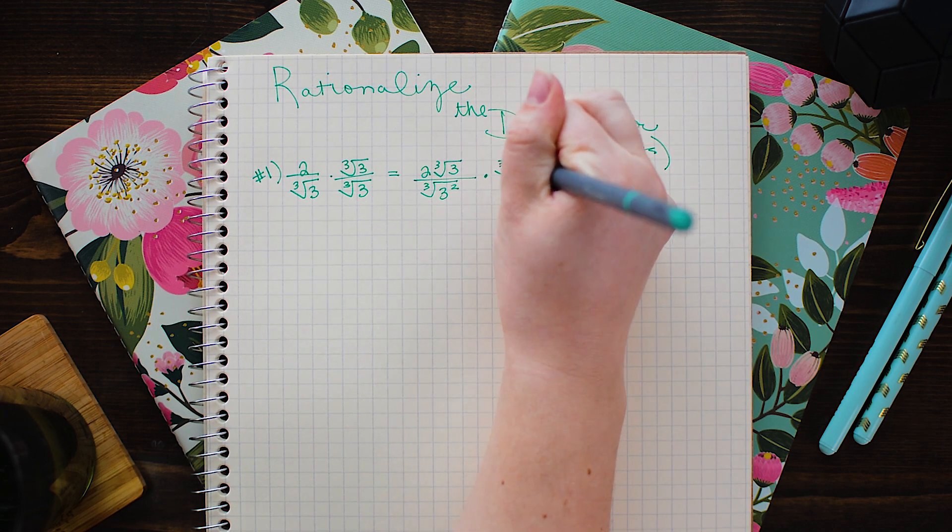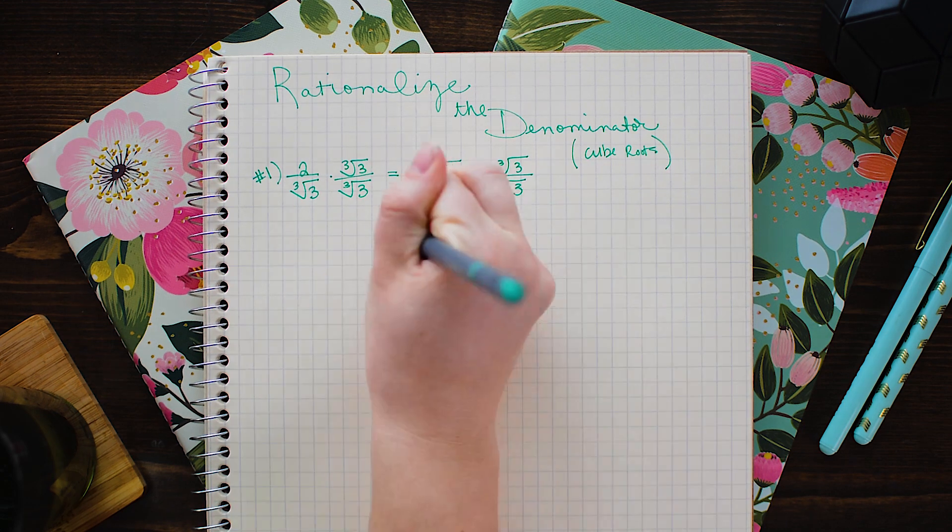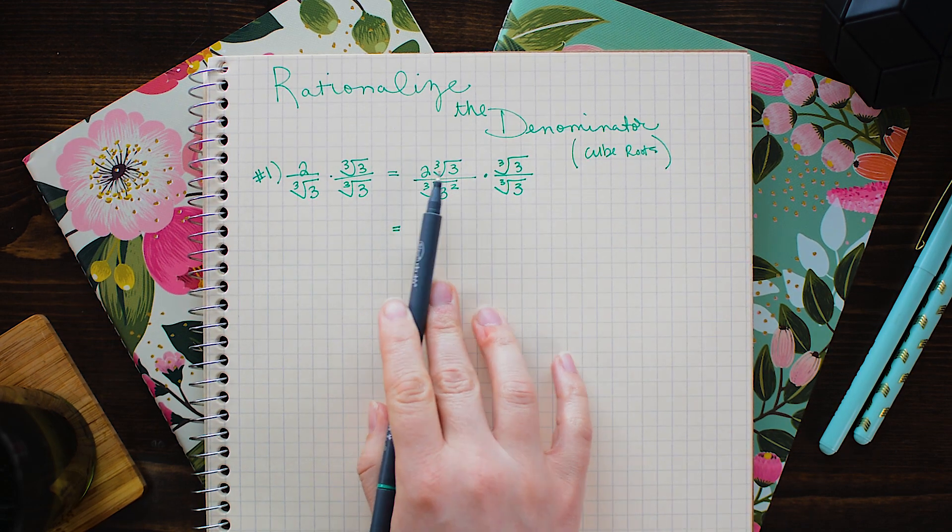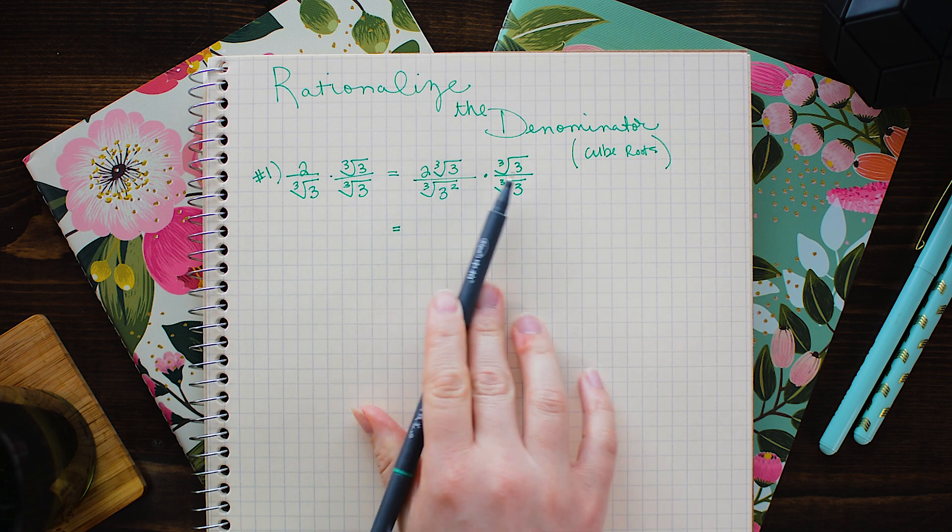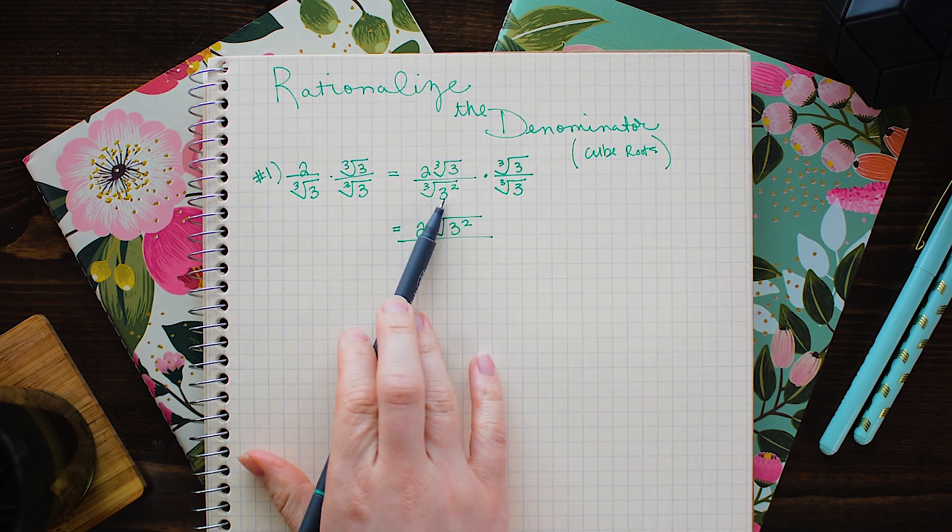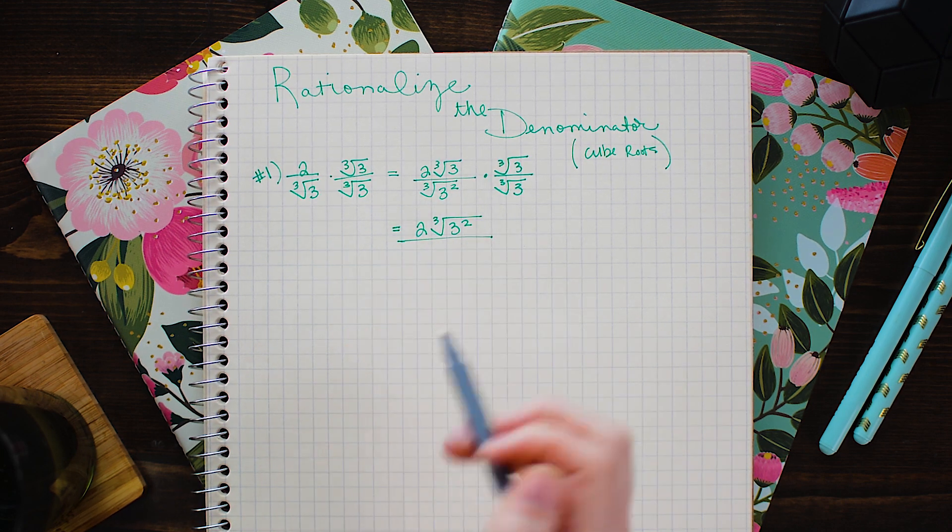So I'm just gonna multiply by another cube root 3 over cube root 3. Now in the numerator I have 2 times the cube root of 3 squared over the cube root of 3 times 3 which is 3 cubed.